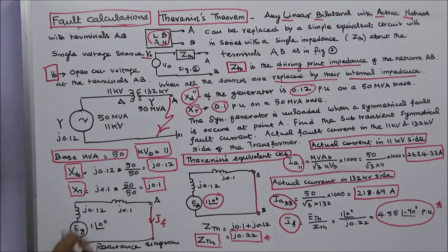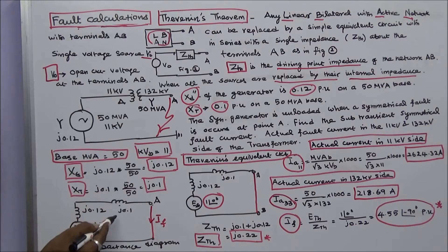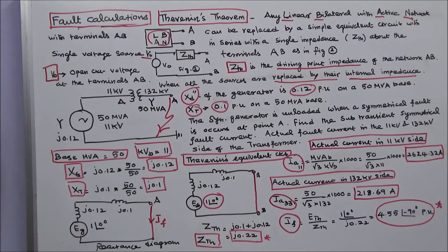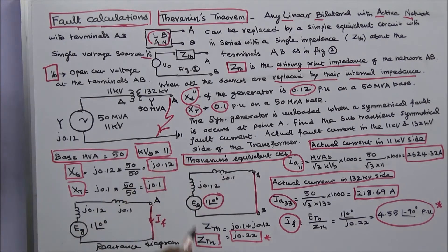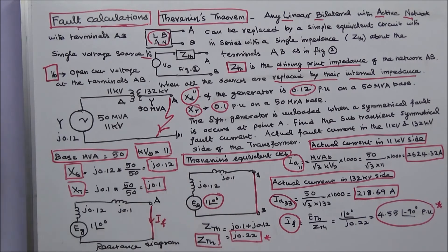Now I draw the reactance diagram. The voltage of the generator is 1∠0°. The reactance of the generator is j0.12 and the reactance of the transformer is j0.1. Next, I draw the Thévenin equivalent circuit. Here the Thévenin voltage is 1∠0°. Thévenin impedance is j0.1 plus j0.12, that is equal to j0.22. Now I can easily calculate the fault current.